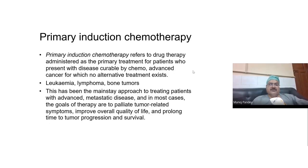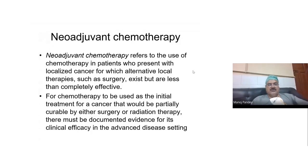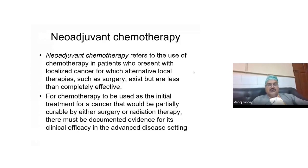Primary induction chemotherapy is given for leukemia, lymphoma, and also for osteosarcoma or bone tumors to make the tumor shrink and make limb conservation possible. Neoadjuvant chemotherapy is basically chemotherapy given before surgery. It is used to reduce the tumor size and make it amenable to surgery — for example, in breast tumors, you give chemotherapy to reduce the size and then proceed with breast conservation. Neoadjuvant chemotherapy is used for organ preservation, and also to reduce tumor bulk and make borderline or inoperable tumors operable.